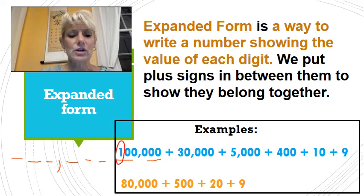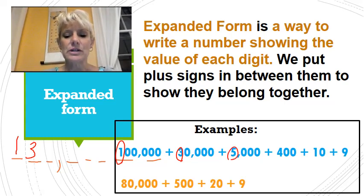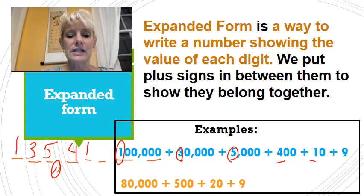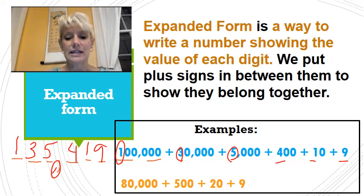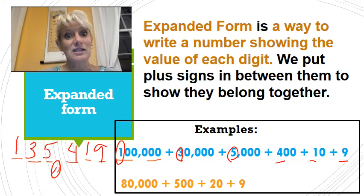There is a one right here, so I put a one — that represents one hundred thousand. Right here I am dealing with thirty thousand, so I put it in the ten thousands place because three ten thousands equals thirty thousand. The next one is right next to the comma, and the five represents five thousand. Then we have four in the hundreds place, one in the tens place, and nine in the ones place. So that number is 135,419 — one hundred thirty-five thousand four hundred nineteen.